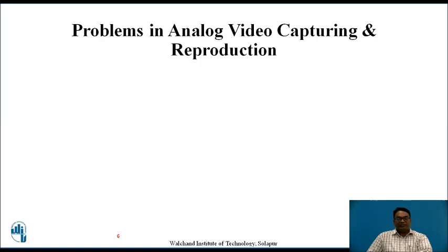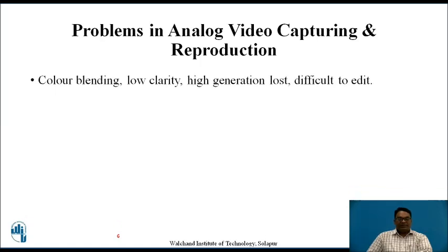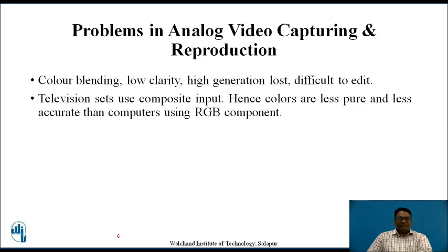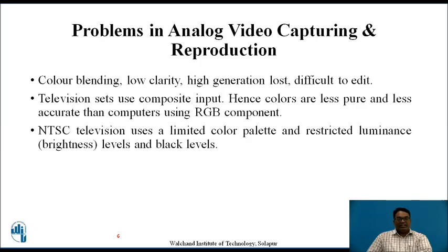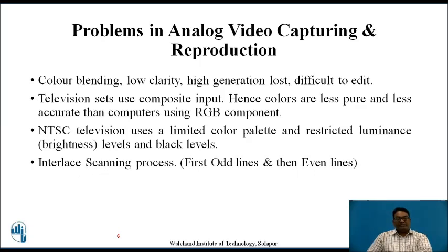So what are the problems in analog video capturing and reproduction? The basic problems are color blending of the image or video, low clarity, high generation loss, and difficulty to edit. Televisions which generally use composite input have less pure and less accurate colors than the RGB component used in computers. NTSC televisions have a limited color palette, hence restrictions on luminance levels — that is, brightness levels and black levels. The interlaced scanning process also takes time, as it first scans odd lines and then the even lines.